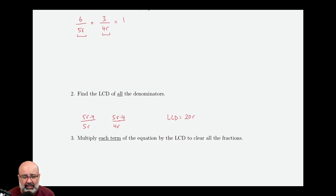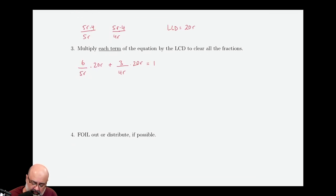Now we multiply each term of the equation by the LCD. So 6 over 5r times 20r plus 3 over 4r times 20r equals 1. Now the reason we're doing this is that we can clear the fractions. So 5 goes into 24 times, r cancels with r. 4 goes into 25 times, r cancels with r.